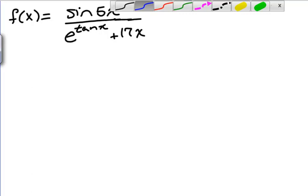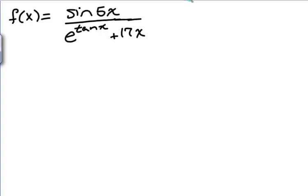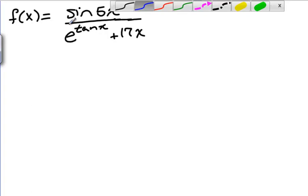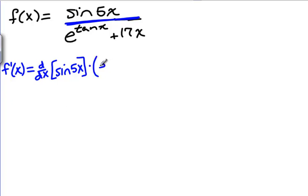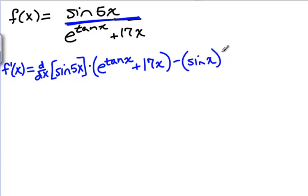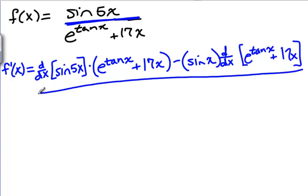Let's try one more example to make sure the idea of working from the outside in is clear. In this example we're looking at sine of 5x divided by e to the tangent of x plus 17x. The outermost thing in this problem is the division sign, so f prime of x is going to be set up using the quotient rule: the derivative of the top times the bottom, minus the top times the derivative of the bottom — I'll just note those derivatives for now — all divided by the bottom squared.